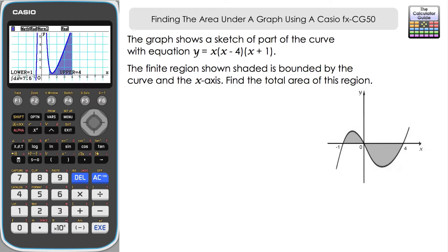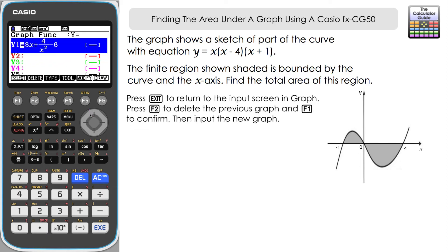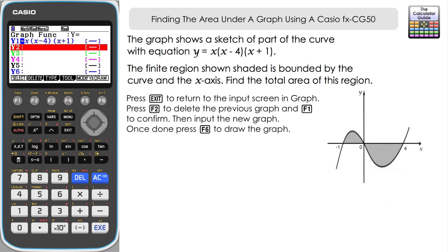If we're going from our previous graph then you just need to press exit and then scroll up to our function there. Let's just delete that, so it's F2 delete, F1 yes, and let's write in our new function. So it's x and then a set of brackets, x minus 4, and then another set, x plus 1, and execute and then F6 to draw.